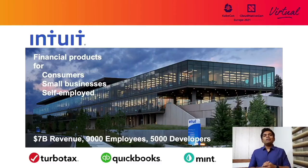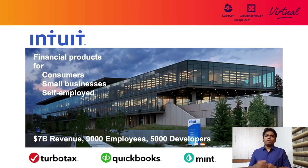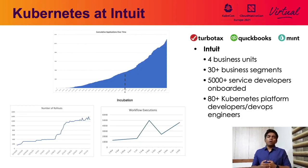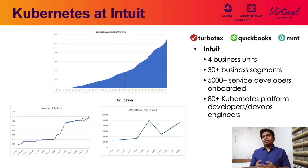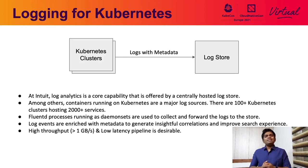Now we'll get into the use case at Intuit. Intuit provides financial solutions for consumers, small businesses, and self-employed individuals. Major products from Intuit include TurboTax, QuickBooks, and Mint. At Intuit, Kubernetes is adopted widely across four business units. It's used extensively at over 30 segments with more than 5,000 engineers onboarded to it. We also have over 80 engineers developing our Kubernetes platform. We'll see how Fluentd and Fluentbit are used to handle logging from Kubernetes clusters at Intuit.